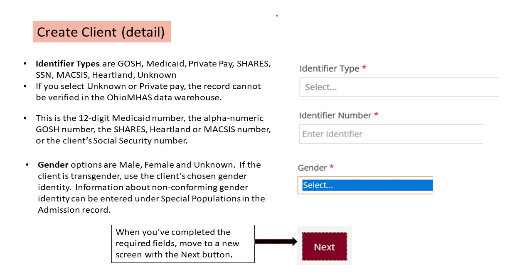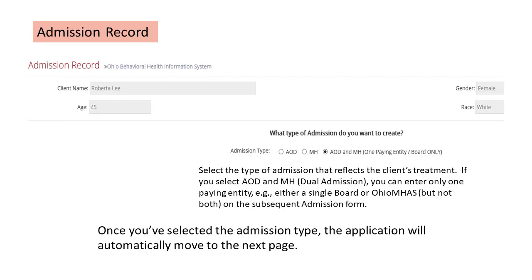When you've entered the required fields, you will move on to the admission record screen with the Next button. All new client records require creation of an admission record. You must choose the type of admission that reflects the client's treatment — whether AOD, MH, or dual AOD/MH admission. You can enter only one paying entity, either a single board or Ohio MHAS but not both, on the subsequent admission form.